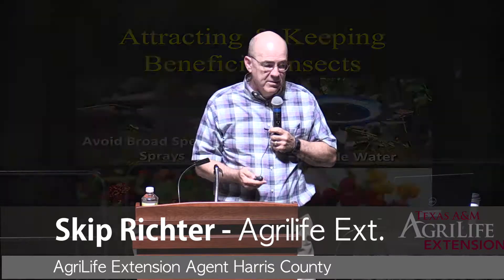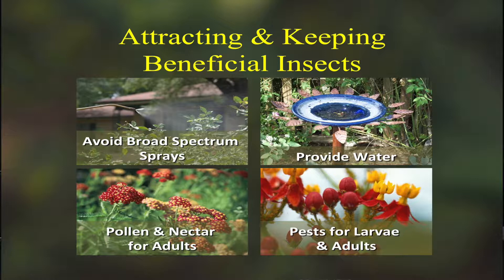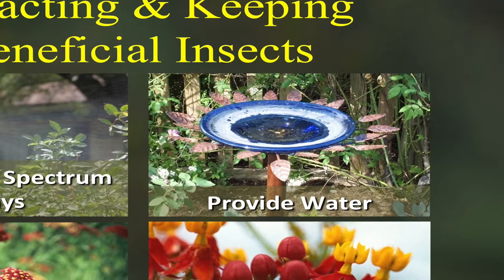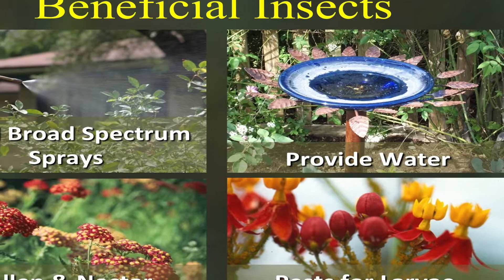How do we avoid that fluctuation? Number one, don't kill them. There are organic and synthetic grenades that kill everything. When you do that you throw things out of balance and kill beneficials. You want to provide water for them, but most importantly you want to provide pollen and nectar for the adults that don't eat pests — including those little parasitic wasps that lay eggs in aphids.